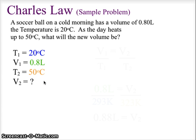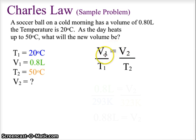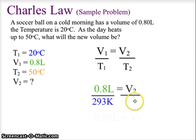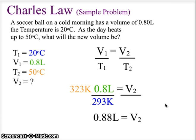Remember, for the gas laws we need to convert Celsius to Kelvin. So the initial temperature will be 293 Kelvin and the final temperature will be 323 Kelvin. We set up our equation: V1 over T1 equals V2 over T2 — initial volume over initial temperature equals final volume over final temperature. Plugging in values: 0.8 liters over 293 Kelvin equals the new volume over 323 Kelvin. Moving 323 to the other side, 323 times 0.8 divided by 293 gives us a final volume of 0.88 liters.